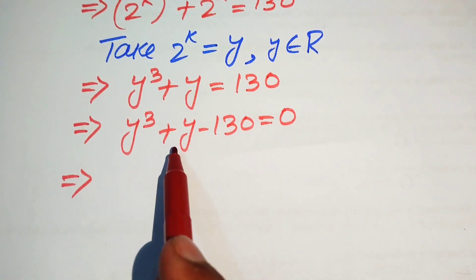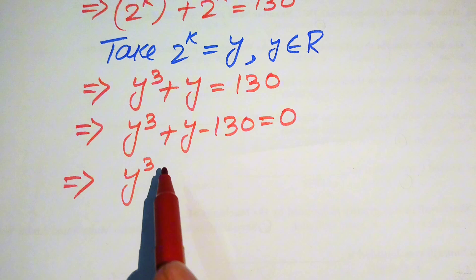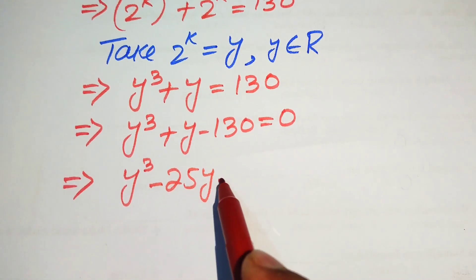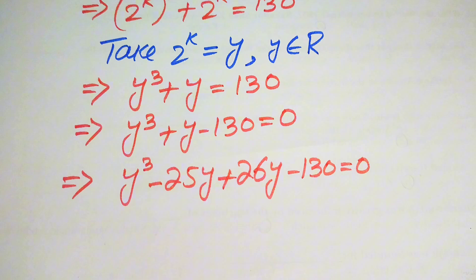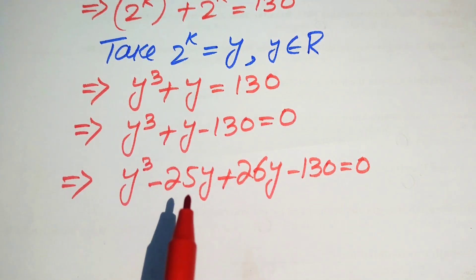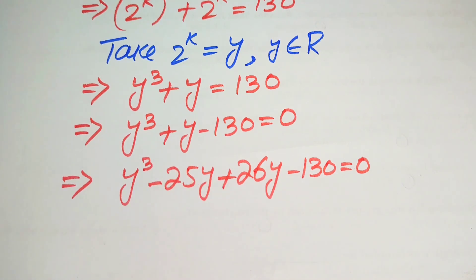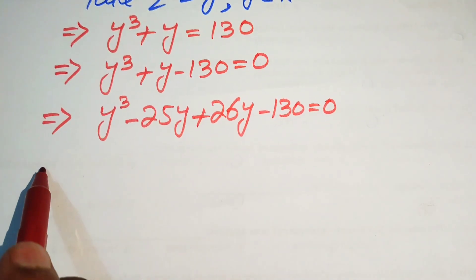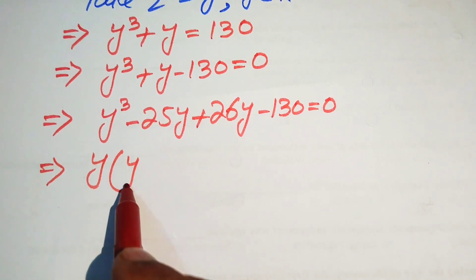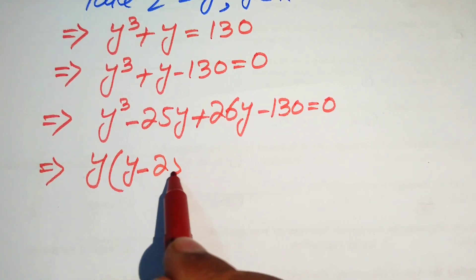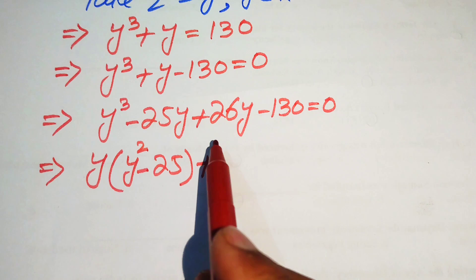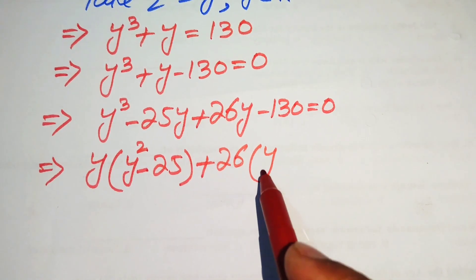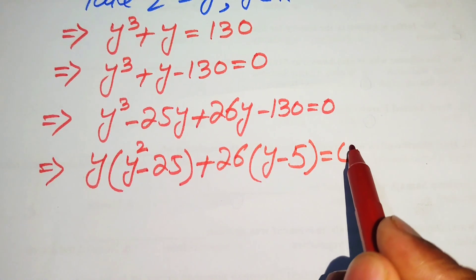We break the middle term. We write y as minus 25y plus 26y, so the equation becomes y cubed minus 25y plus 26y minus 130 equals 0. We break y as minus 25 plus 26 because minus 25 plus 26 equals plus 1. After this step, we have y as the common term, so we take out common y and get the remaining terms y squared minus 25, and taking out 26 gives the remaining term y minus 5, equals 0.